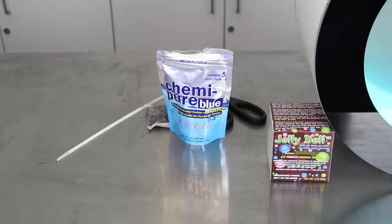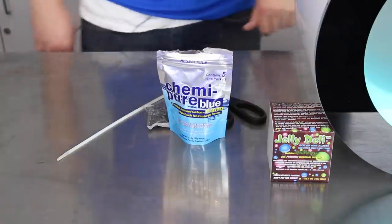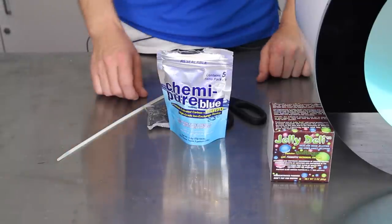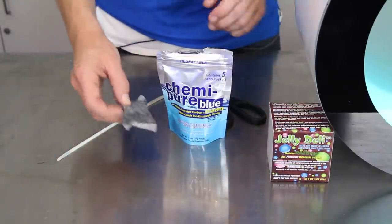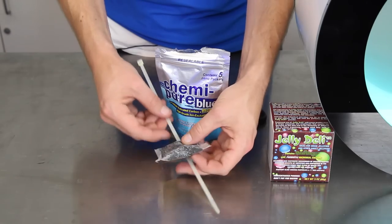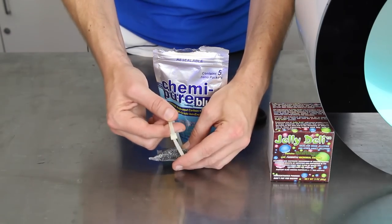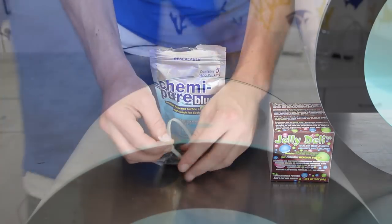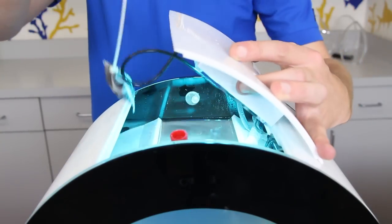Now you can also add some additional filter media such as the Kemi Pure Blue Nano which will help keep the water clean. These are nice because they're pre-packaged in a convenient filter bag that you simply can drop into the aquarium. If you use a zip tie to wrap around the bag it'll make it much easier to pull the bag in and out of the tank.